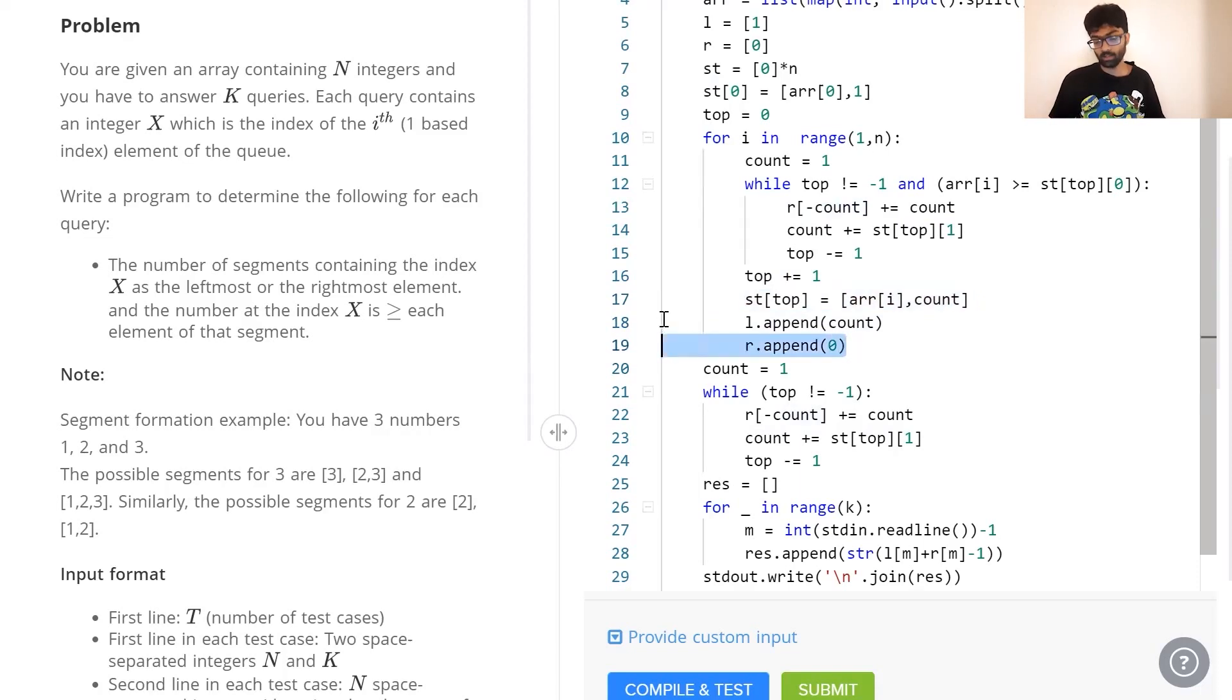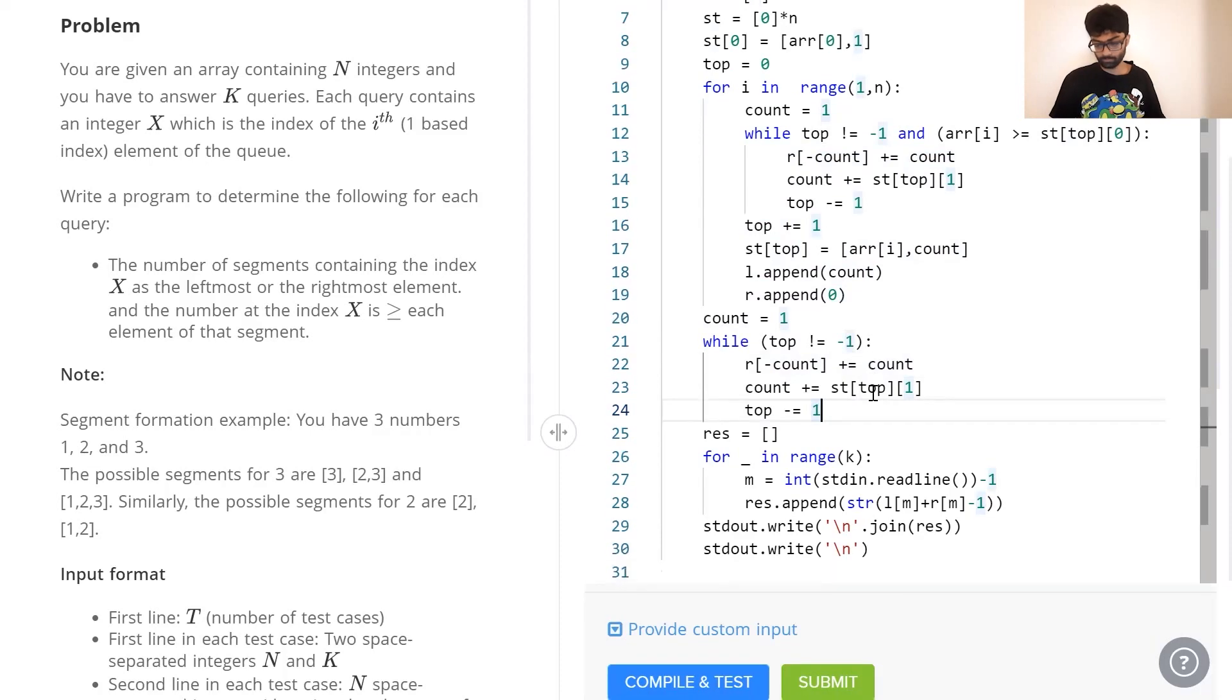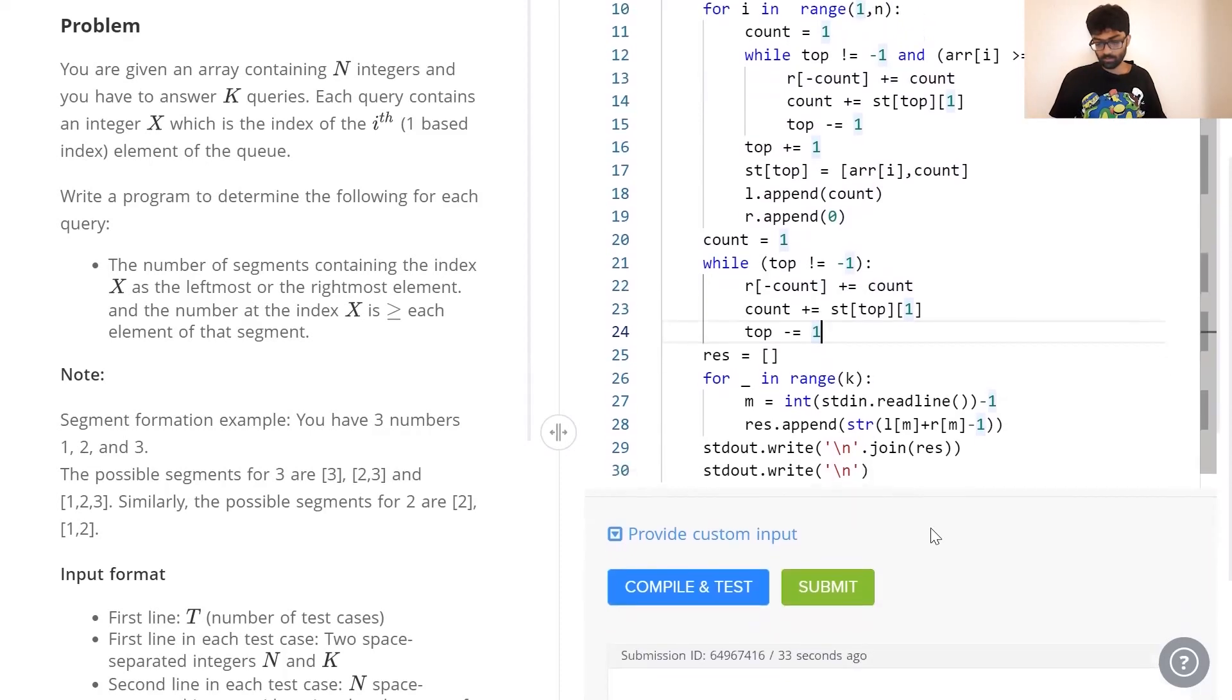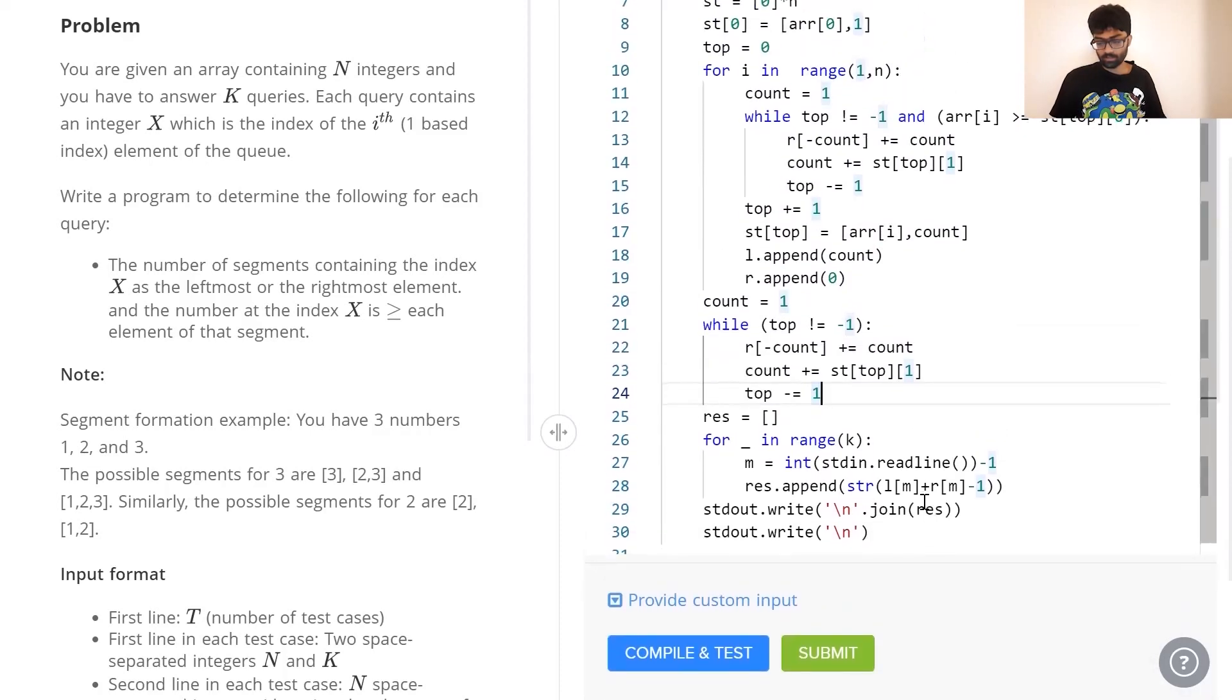Finally, if there are any elements left in the stack, we pop them out one by one. And we make sure to update our R value while doing so. It's now a simple matter of calculating L plus R minus 1 and displaying it. Why do we calculate L plus R minus 1? That's because the element itself is counted twice. Once in L and once in R.